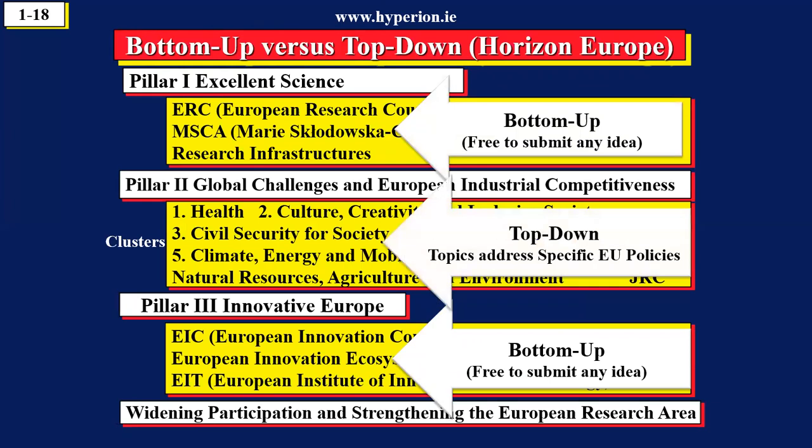Pillar 2 is called top-down. Top-down means that there's a program on health. Health is divided into about 50 topics, and one of the topics deals with mental health. Cluster 4 is dealing with digital, and inside there, there's a topic dealing with industry 4.0. Energy — there's a topic dealing with renewable energies. Those topics are there to address specific policies in Europe. So can you see the difference between Pillar 1, 2, and 3?